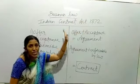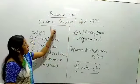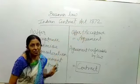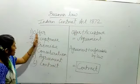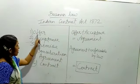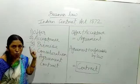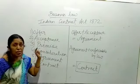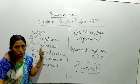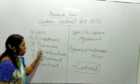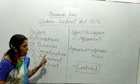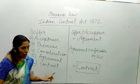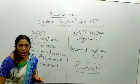Ismein sabse bada topic hamara hai Indian Contract Act 1872. Theek hai, ismein humein kuch ye terms padhne hain — that is: offer, acceptance, promise, consideration, agreement, and contract. Contract ka matlab hota hai anubandh.